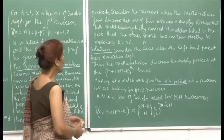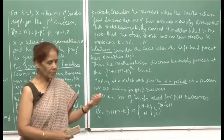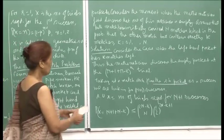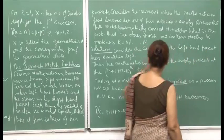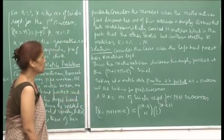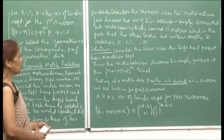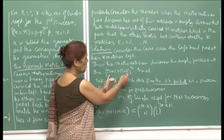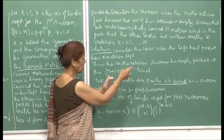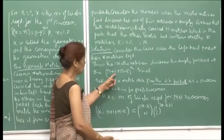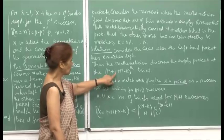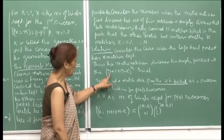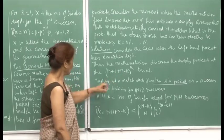Consider the case when the left hand pocket has k matches left. That means the right hand pocket is empty and the left hand pocket matchbox has k matches left. The mathematician discovers the empty pocket after he has emptied the N match sticks in the right hand pocket, and here he emptied N minus k, because k are left in the left hand pocket. Then on the N plus 1-th time he takes out the matchbox from the right hand pocket, he discovers it is empty. So the total number of trials are N plus N minus k plus 1.